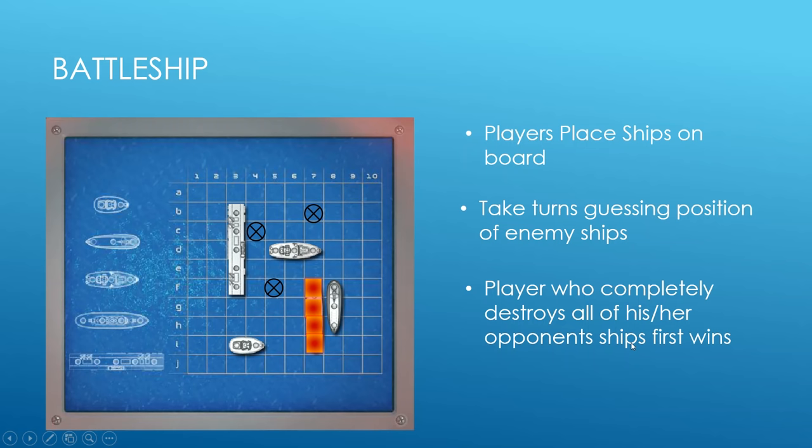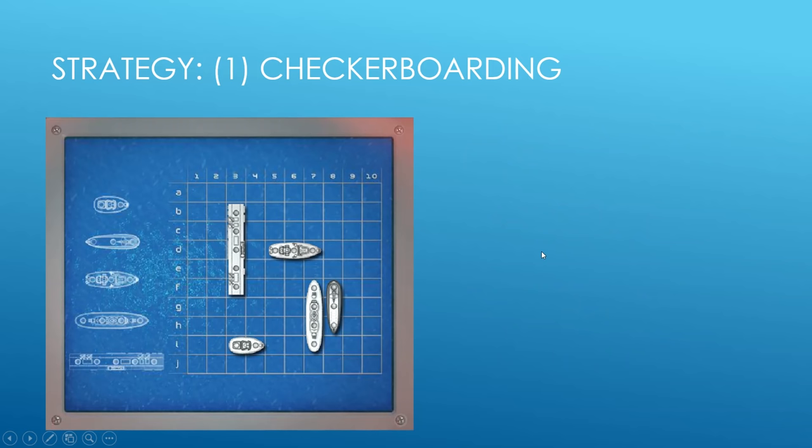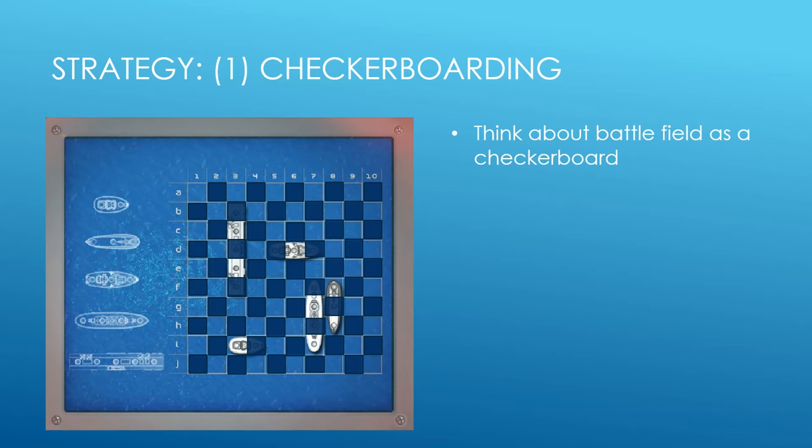So how can you play this game more strategically and win almost every time? The first strategy is called checkerboarding. This strategy is pretty straightforward - instead of thinking of the game as a 10-by-10 square, create a checkerboard on the grid and then only fire on either the light tiles or the dark tiles.